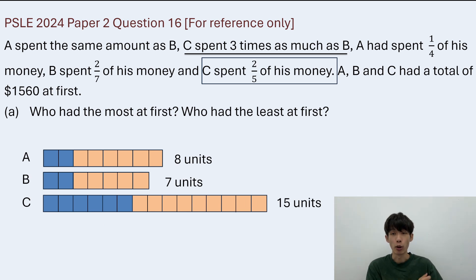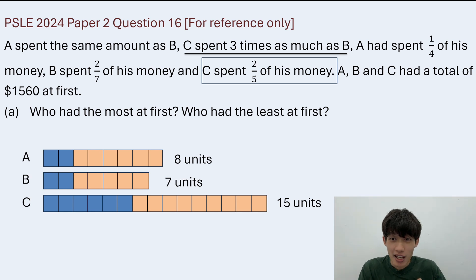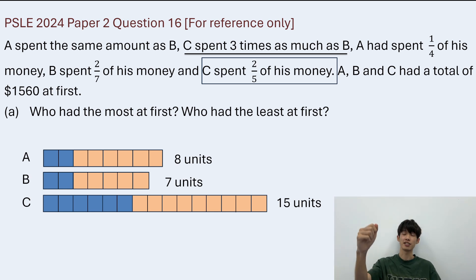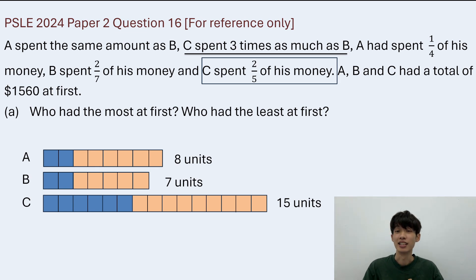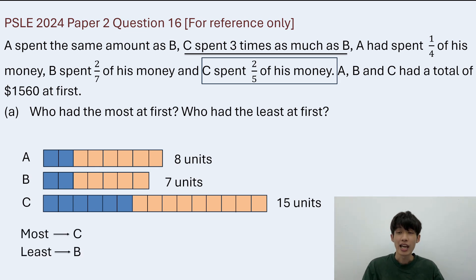That's how we draw the original amount of money in terms of units. Who has the most? It's C with 15 units. And who has the least? B has 7 units as the least. So the answer is C has the most and B has the least.